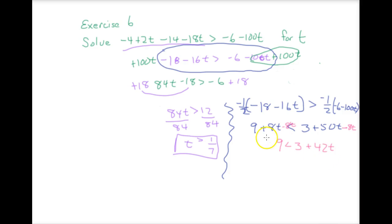9 is less than 3 plus 42t. I was worried, but I see this 42 and this 84. They're about half of each other. And we did go by half, so it makes sense. So, we're going to need to subtract 3 from both sides. Minus 3, minus 3. We get 6 is less than 42t. Let me pick a better color. We're going to divide by 42.